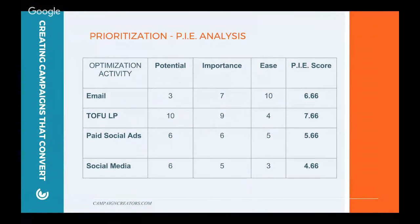You can see here that if we were focusing on what to do first, we would probably take that top-of-funnel landing page and start to optimize that as best as possible. Based on that PI analysis, these are the things we decided to focus on most: for email, click-through rate; for the landing page, form submission rate; for paid ads, cost per lead really needed to improve; and for social media, click-through rate.